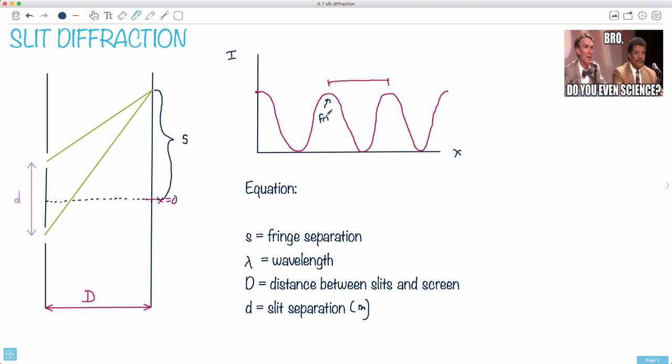Then we've got the distance between those fringes. These top things here we call fringes, so this right here is a fringe and here would be another fringe. We've got this fringe separation, s, which is the fringe separation in meters. That's the distance between your maximums.